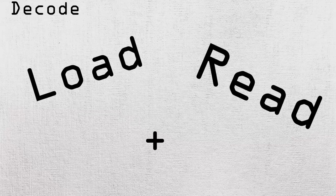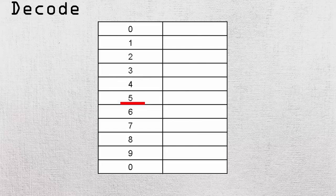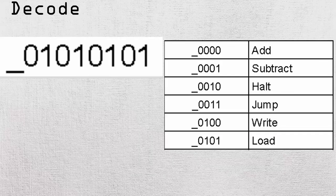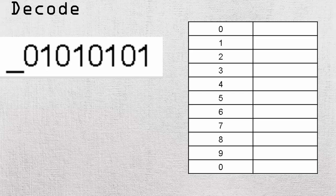The next phase is the decode phase. The instruction consists of two parts: the opcode and the operand. The opcode is the type of computation that must be done, and the operand is the address of the register onto which the computation should be done. We can use the table to see what each opcode means. The opcode 0101 means load, and the operand has the address of 0101, which translates to load address 0101.